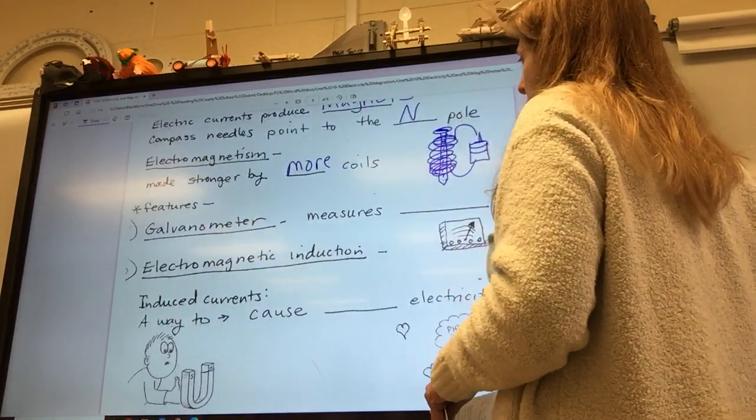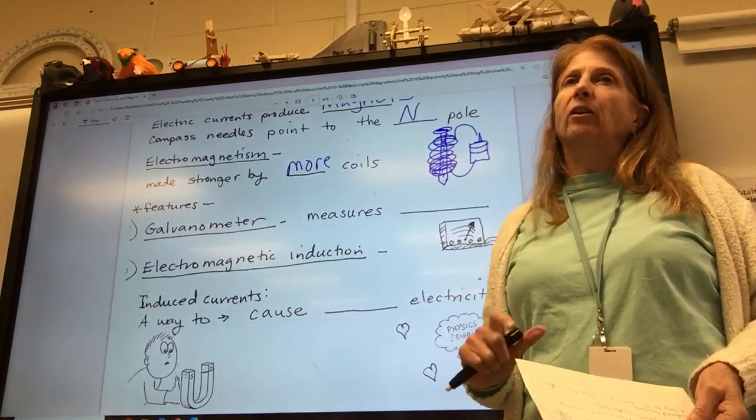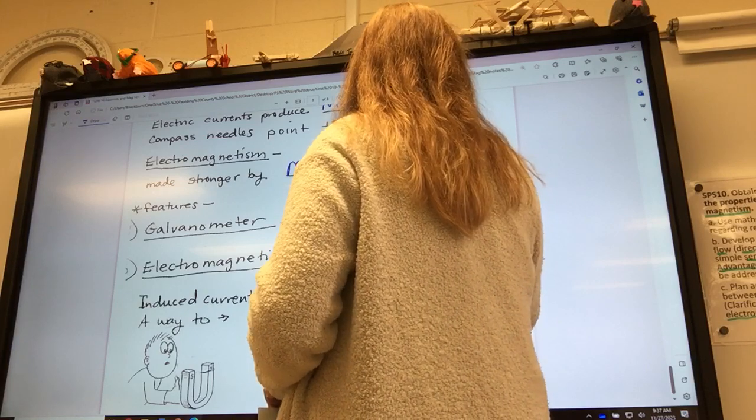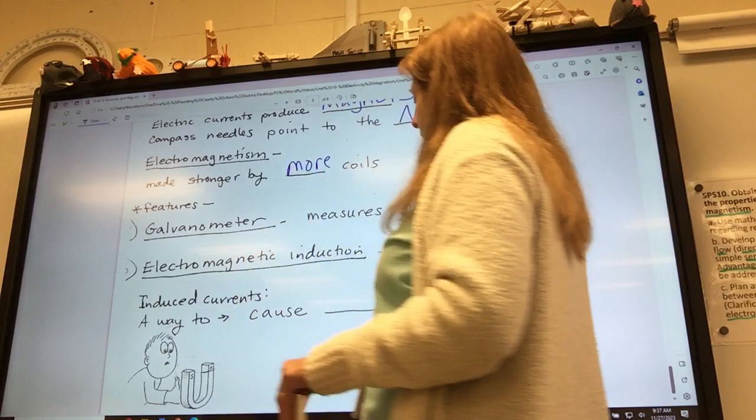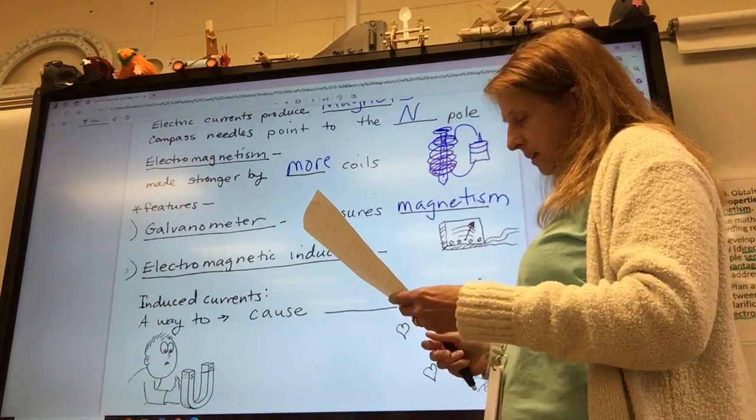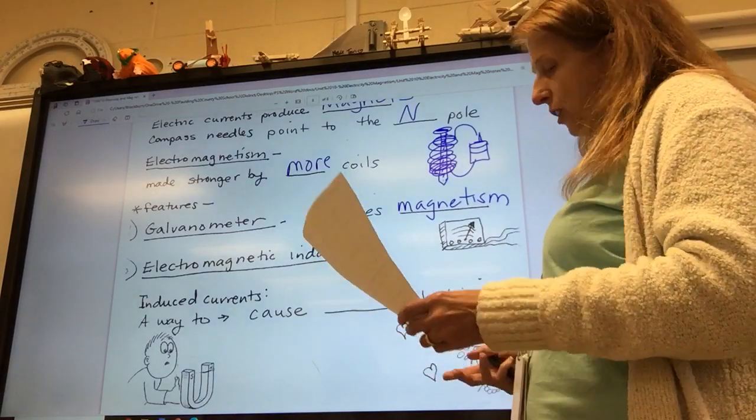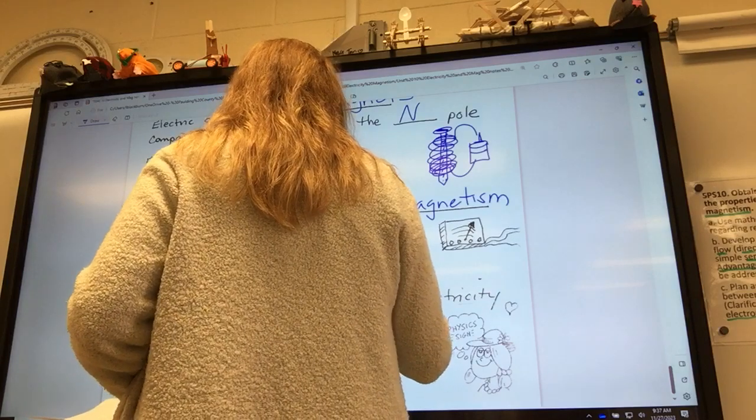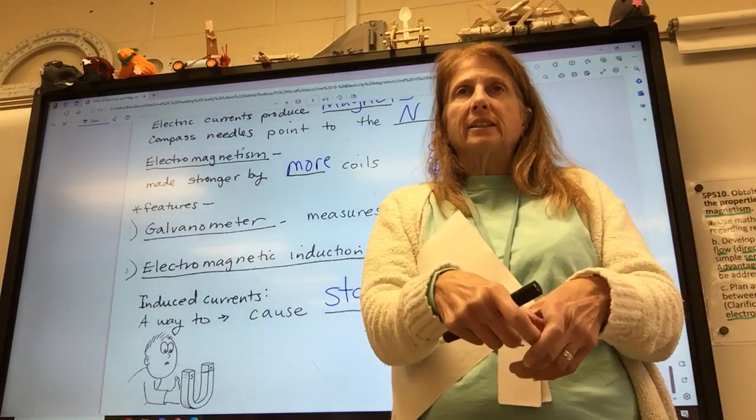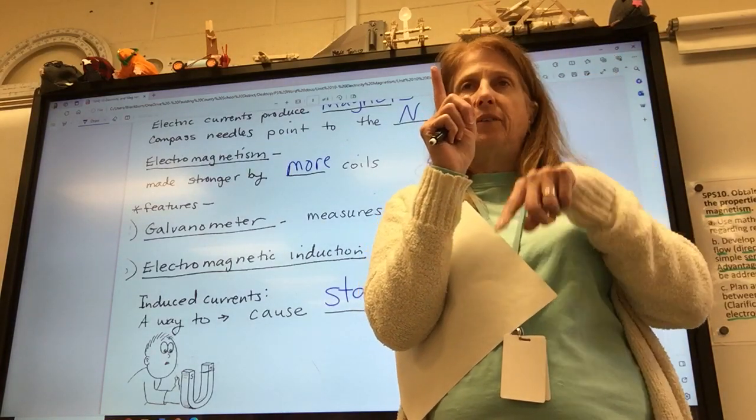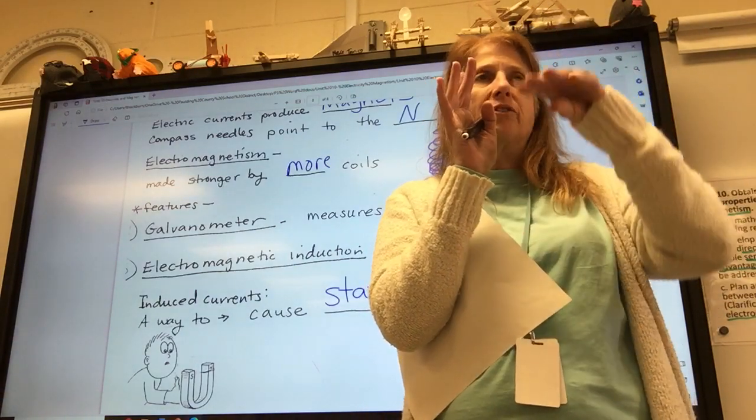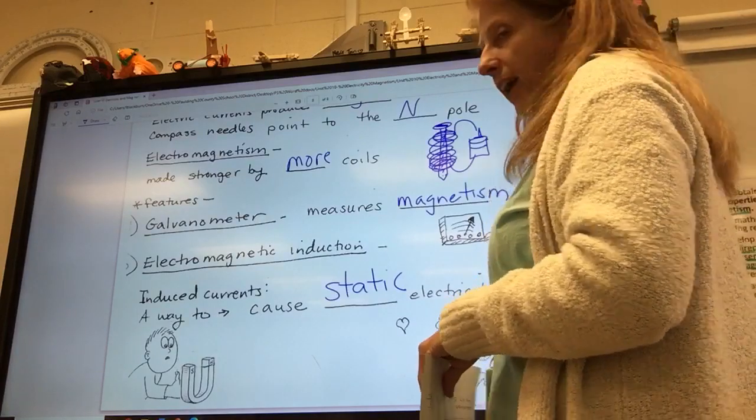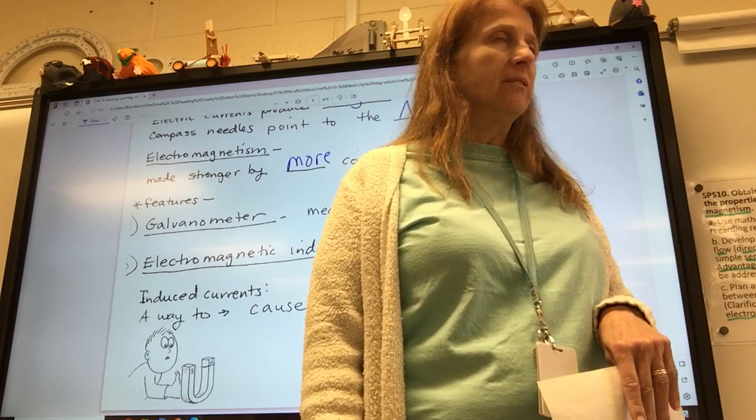So, here is a few other little things about magnets. Just like an ammeter measures amps and a voltmeter measures volts, there's something that can measure magnetism called a galvanometer. There's also electromagnetic induction. Induced currents are a way to cause static electricity. Is that all of our notes? Did I do all of it? Is everything filled out? Ta-da!